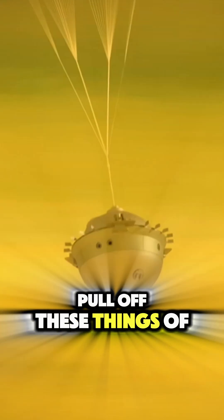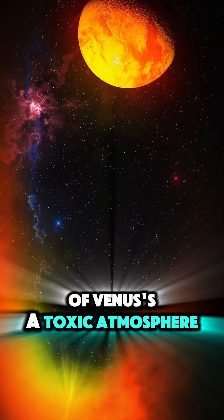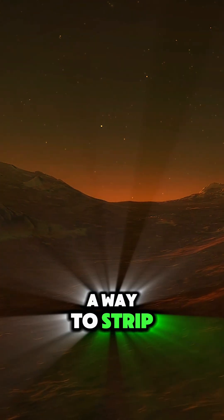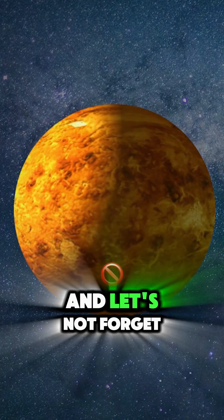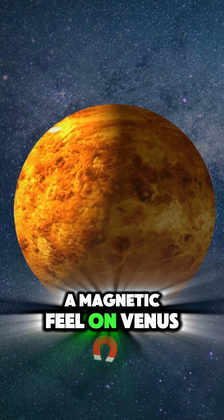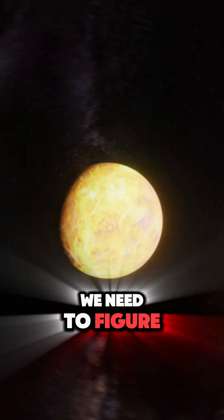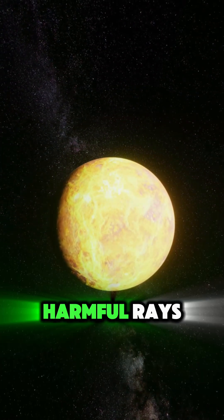Even if we could pull off these things of cosmic engineering, there's still the issue of Venus's thick, toxic atmosphere. We need to find a way to strip away all that carbon dioxide and replace it with breathable air. And let's not forget about the lack of a magnetic field on Venus, which leaves it vulnerable to solar radiation. We need to figure out a way to shield the planet from those harmful rays.